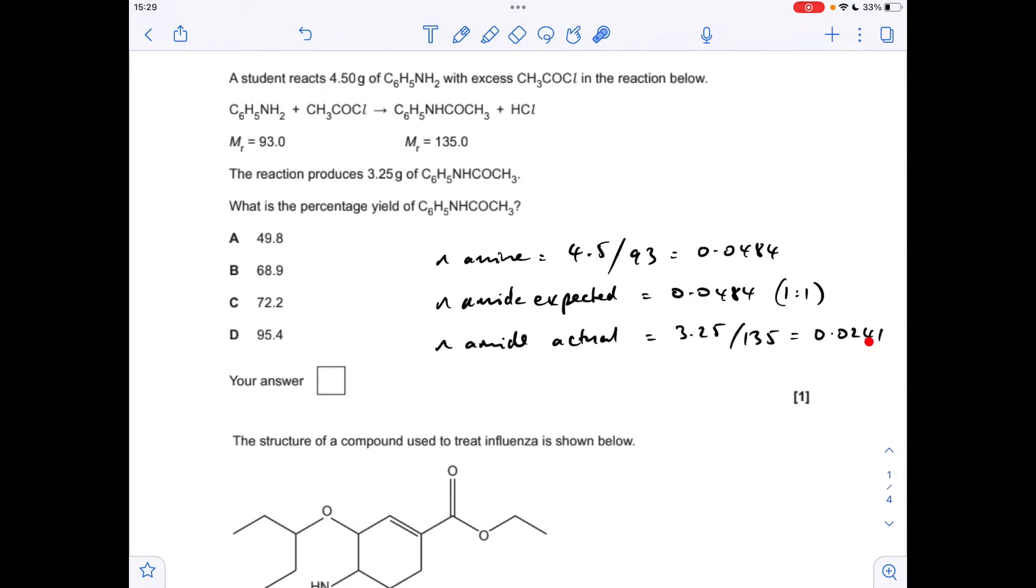So that's coming out at 0.0241. The percentage yield is the actual divided by the expected multiplied by 100, which gives an answer of 49.8%, so it was option A.